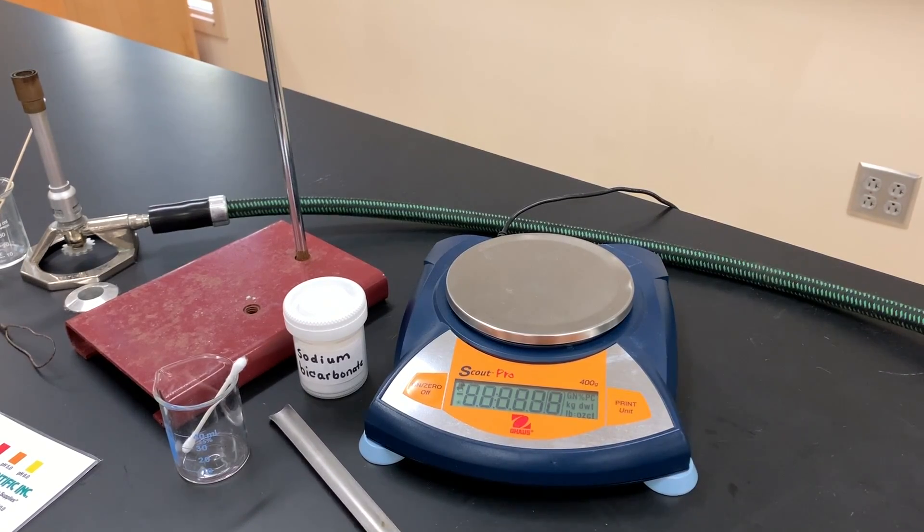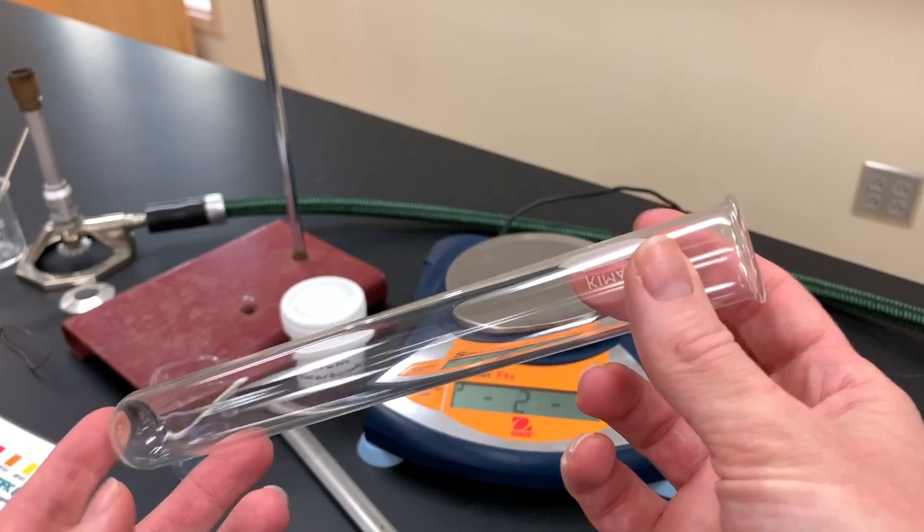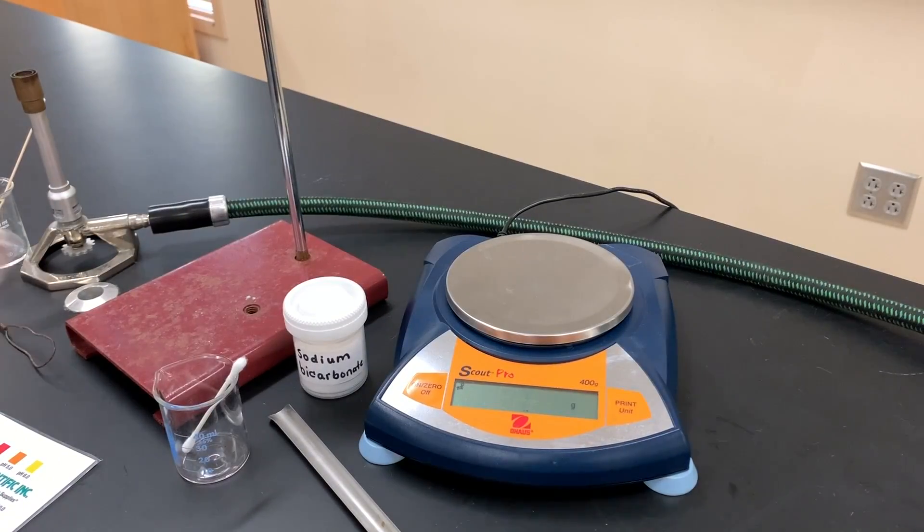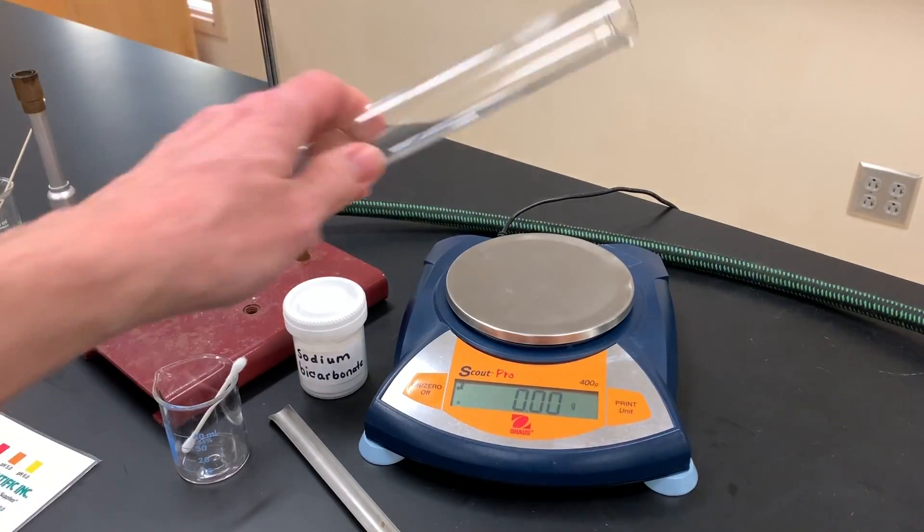The next thing is to have a clean dry large test tube. Once the balance is zeroed and it says grams as your label, you can place your test tube on there.